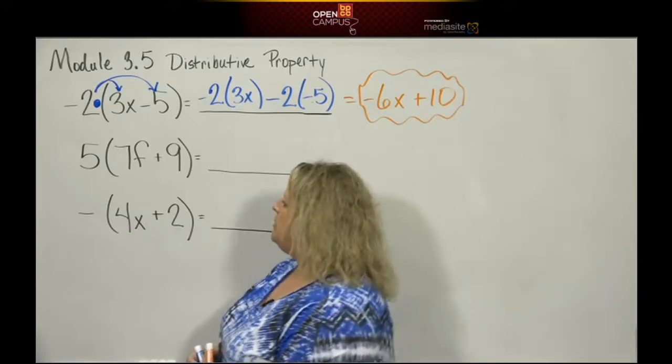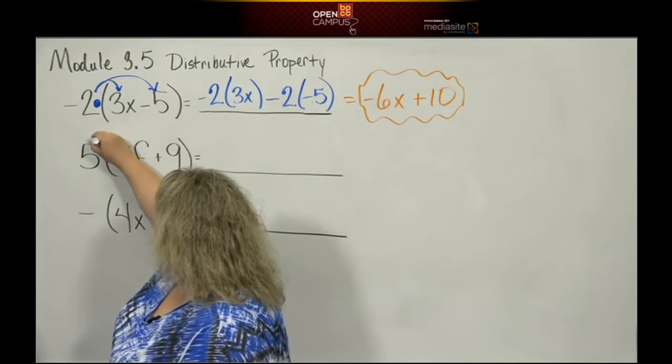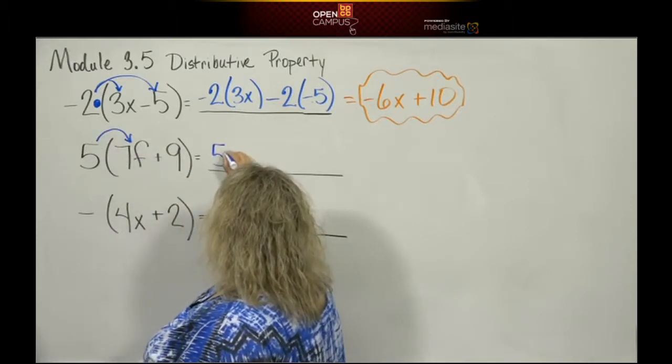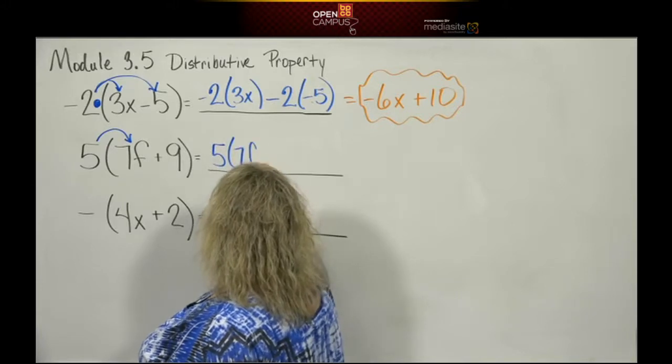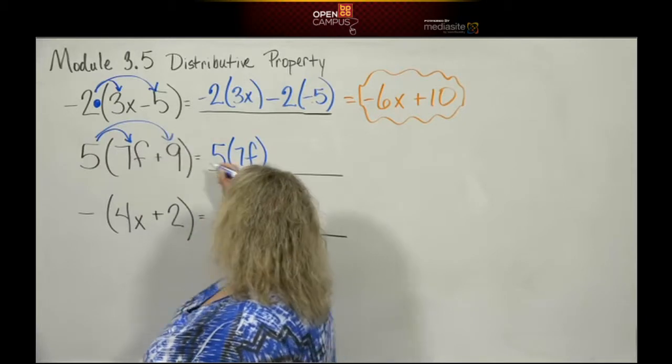All right, let's go to the next one. This is 5 times 7f, so that would be 5 times 7f. We're going to be consistent, and then 5 times 9.